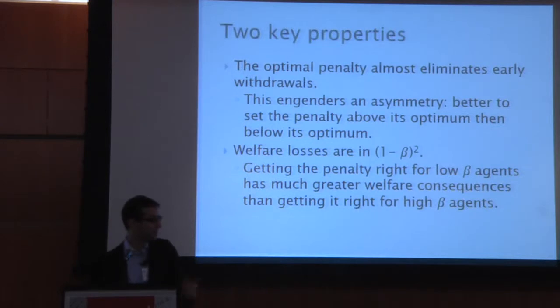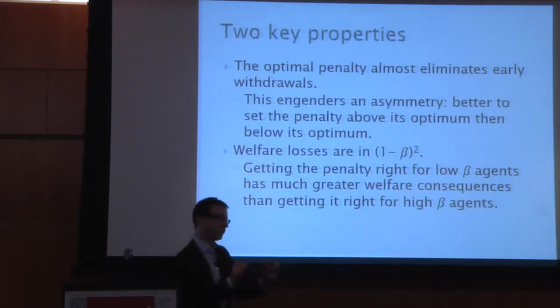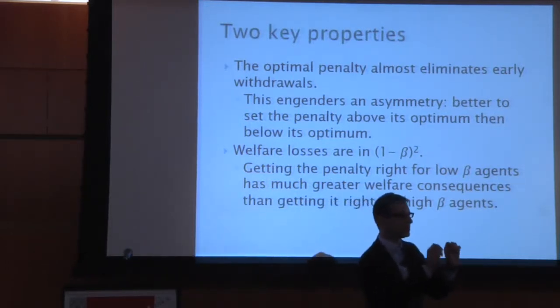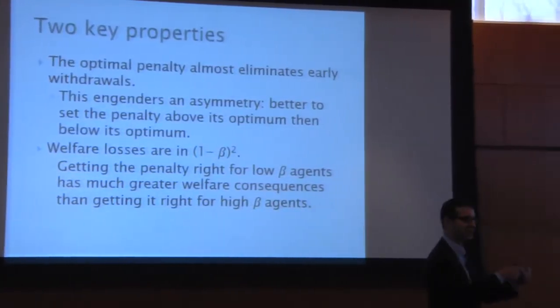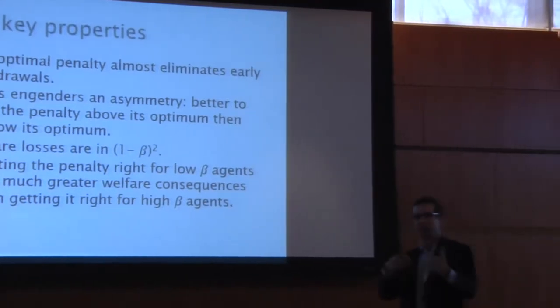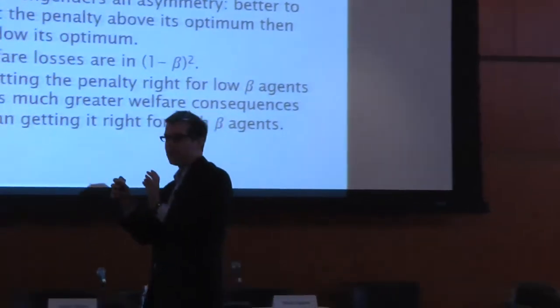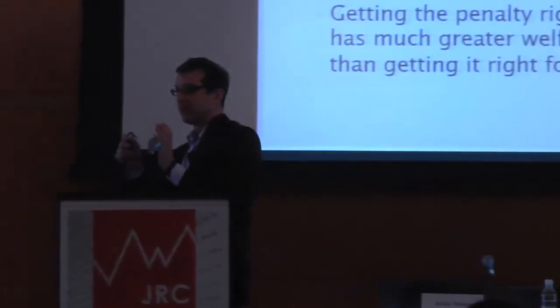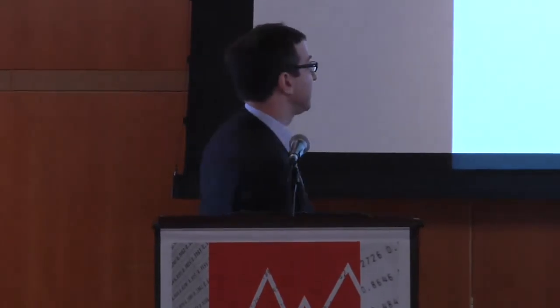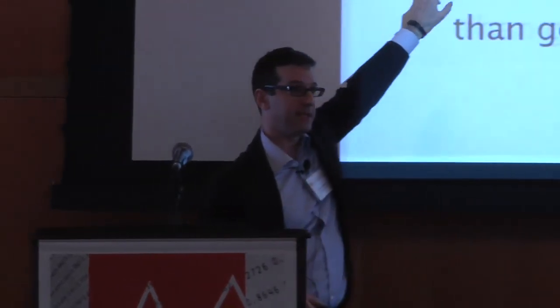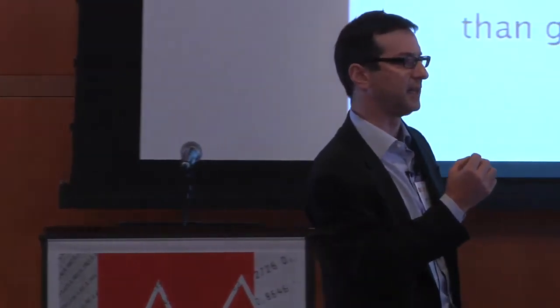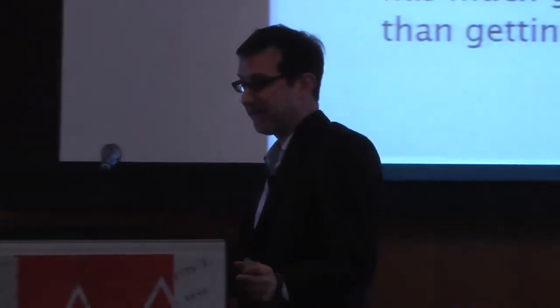Two key properties emerge. First, the optimal penalties almost eliminate withdrawals — with a 30% penalty, agents essentially don't consume early; they do only in extreme events with very large taste shocks. Second, the welfare losses for agents are in 1 minus beta squared — a Harberger-like result — which means we should be most worried societally for the low-beta agents, the people with the most present bias. They're the ones we should really be focusing on when we design savings institutions.